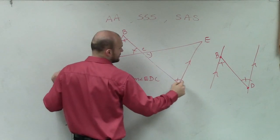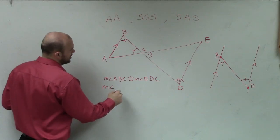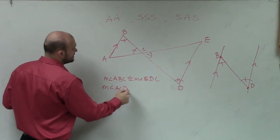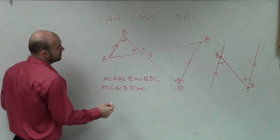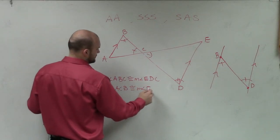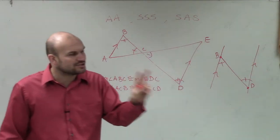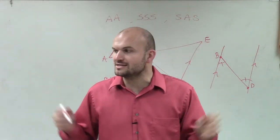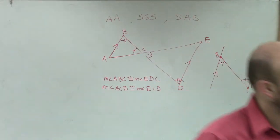Then I can say the measure of angle ACD is congruent to the measure of angle ECD. And since we have two angles that are now congruent, can we now say these are similar? Yeah, but we're good. Cool.